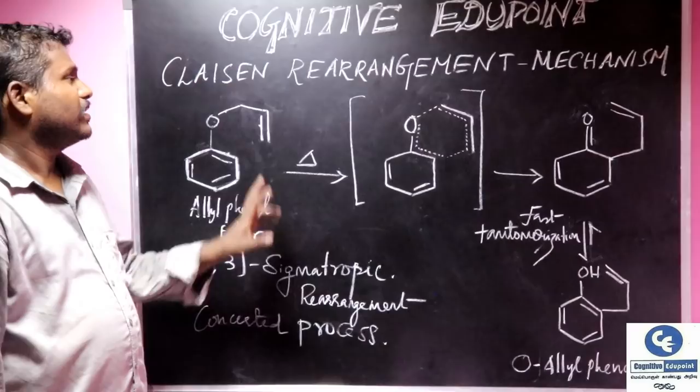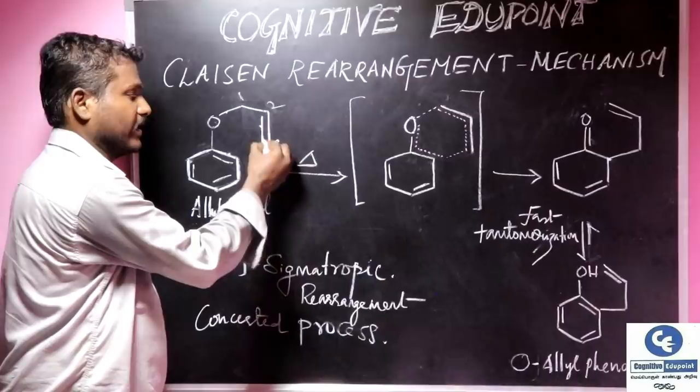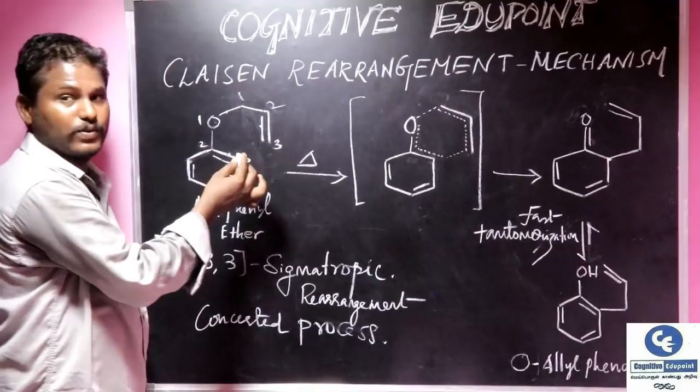Now we will discuss the mechanism of Claisen's rearrangement. We have our starting product, allyl phenyl ether. Here, it has a unique structure of 1,2,3, a set of pi-groups, another set of 1,2,3 pi-groups.